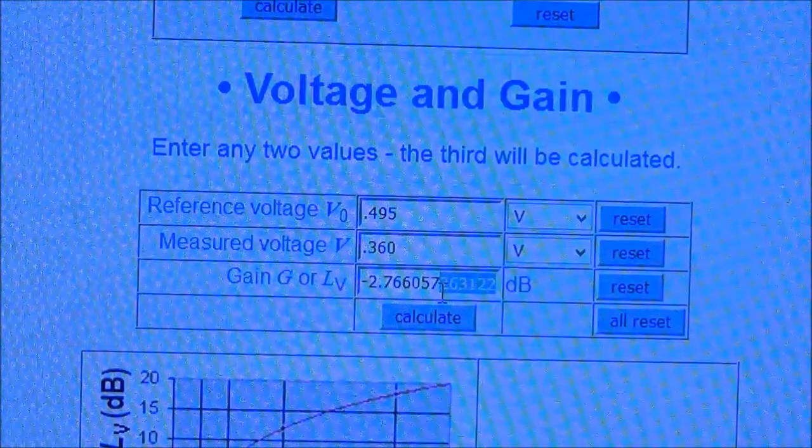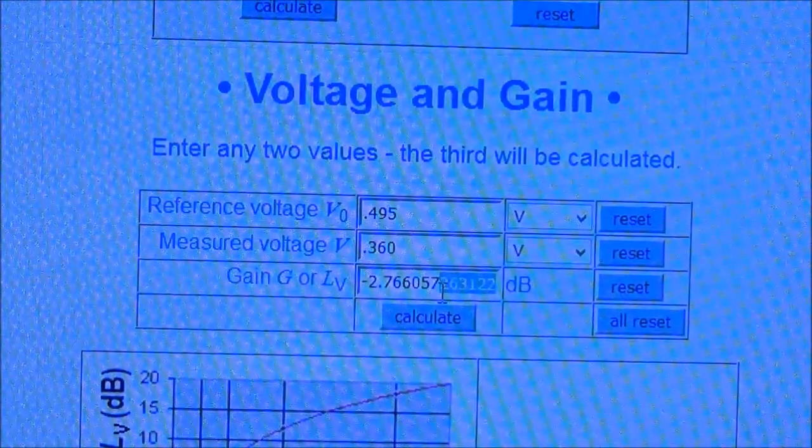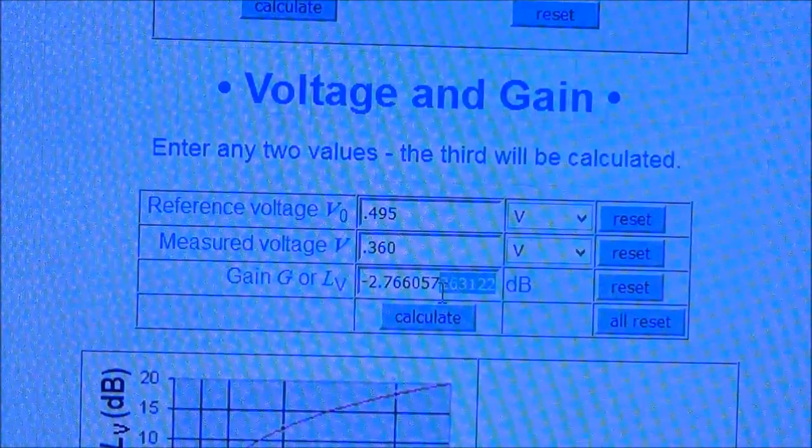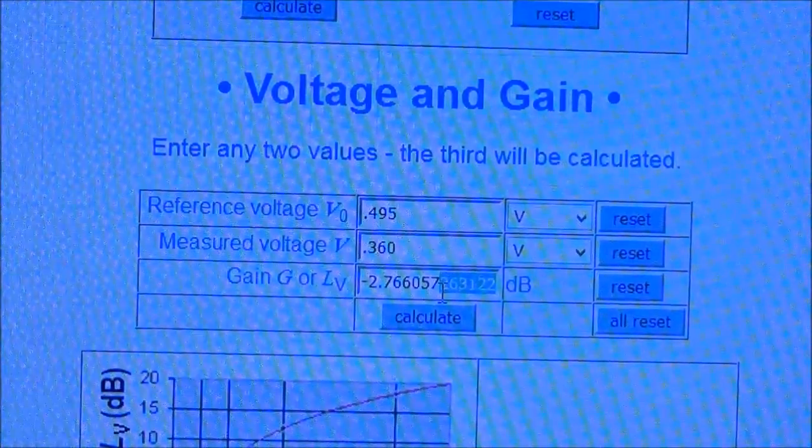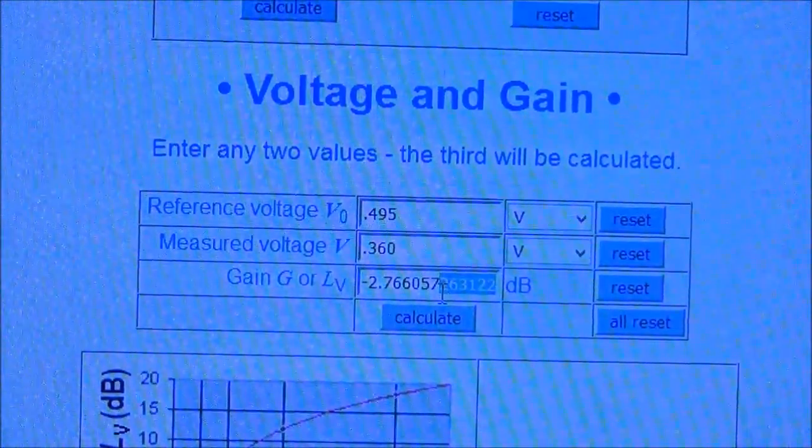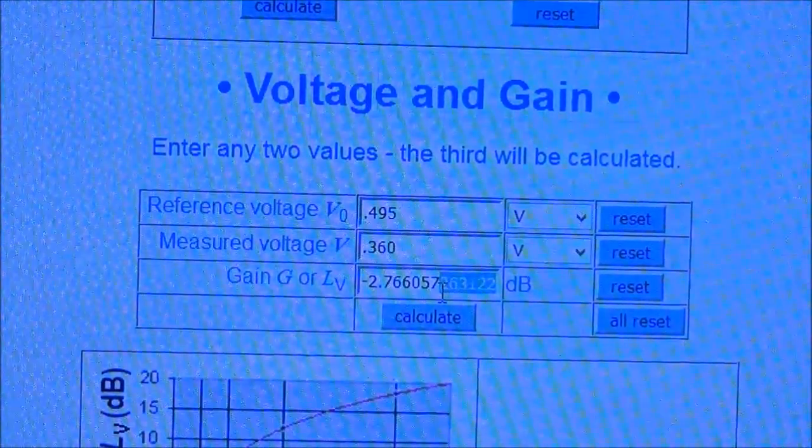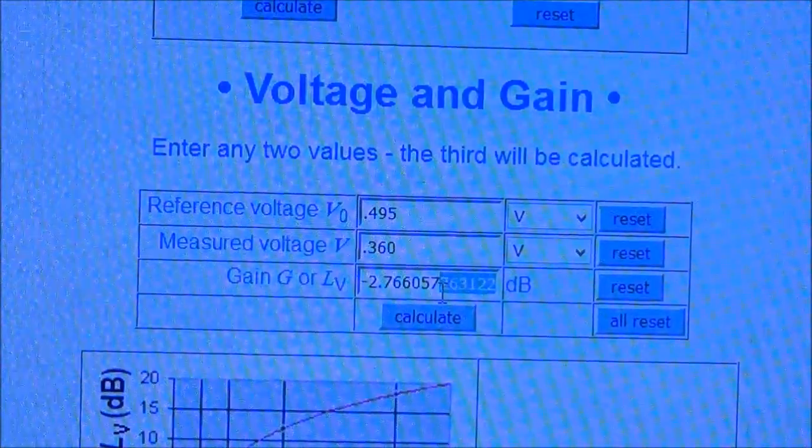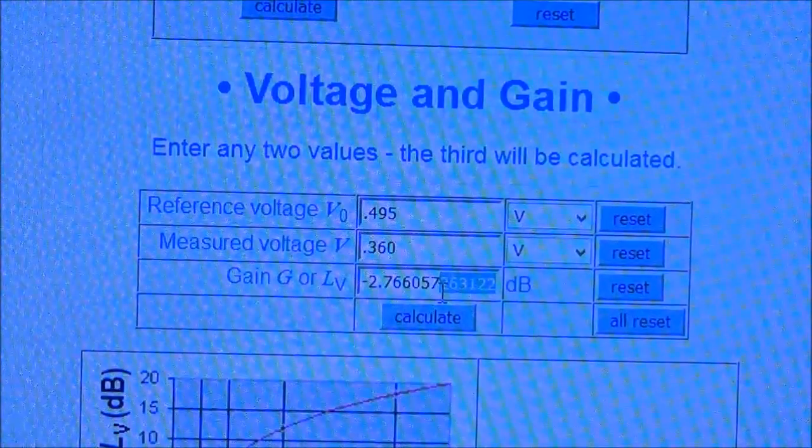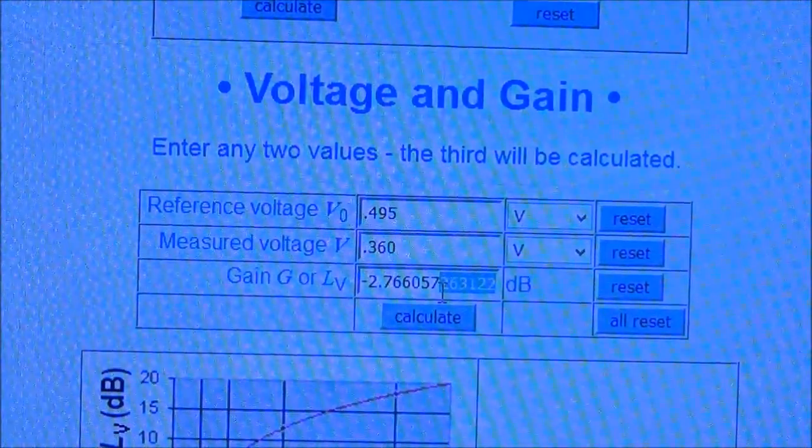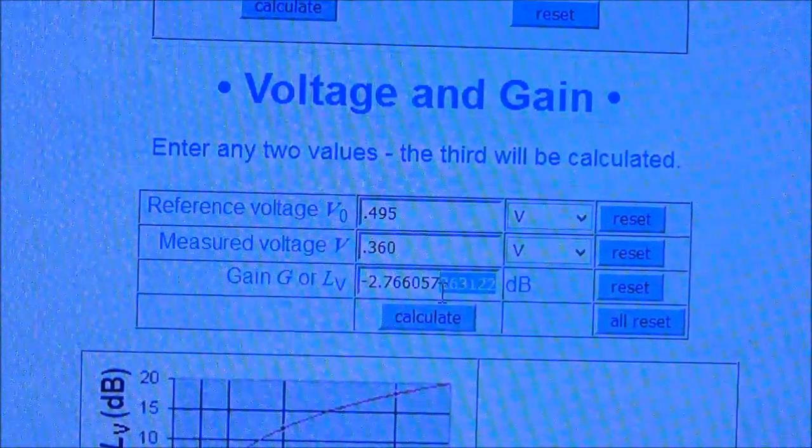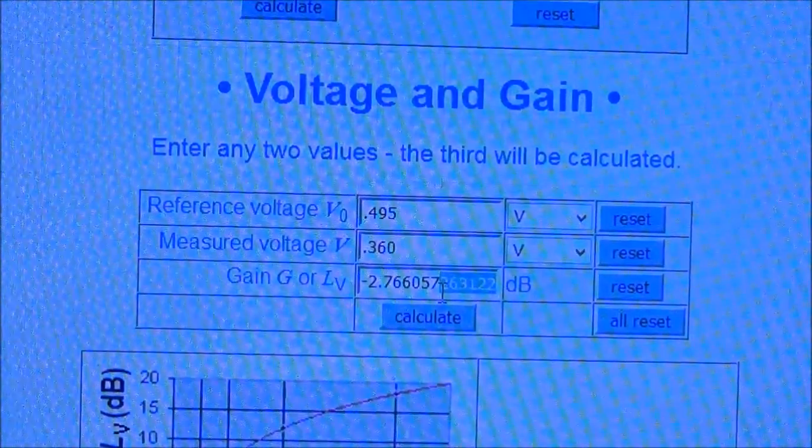Now looking at my chart, it says here, if your test frequency is 2000 hertz, then you should be getting minus 2.6 dB, and I'm getting 2.76, so that's really pretty close. Any error measurements, they're gonna be in the preamp itself and also in my calculation as far as my vision is concerned.